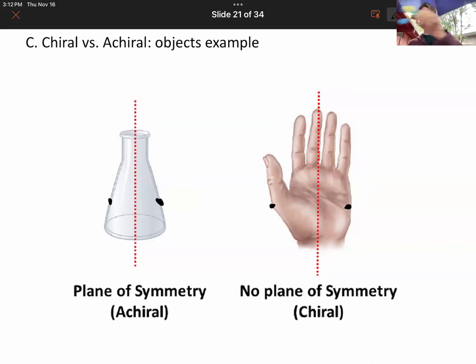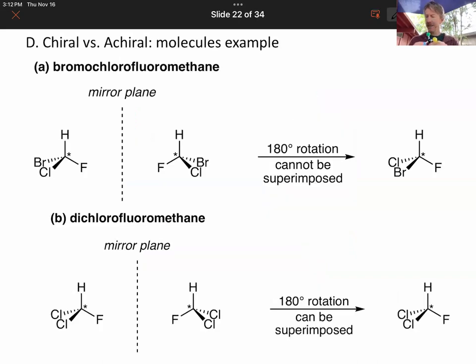No matter where you draw the line of symmetry here, and that's what we're going to do next. This is bromochlorofluoromethane. And again, something that you couldn't be asked to name. We've got one carbon, and that carbon is the chiral center.